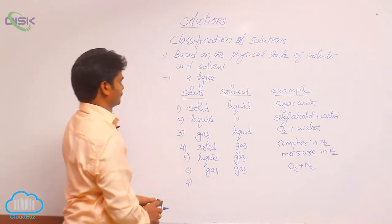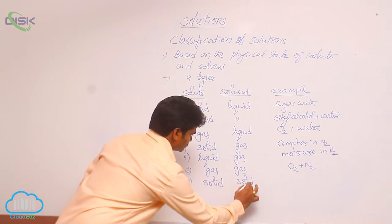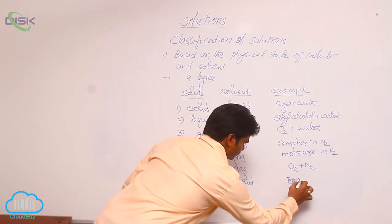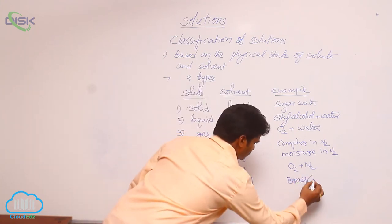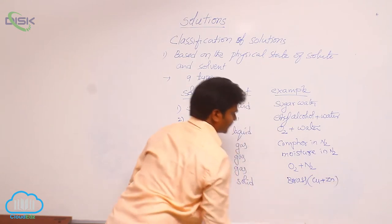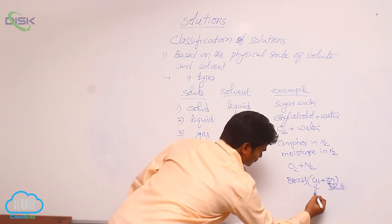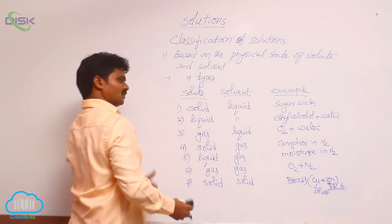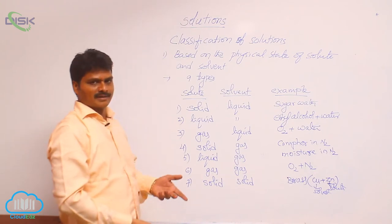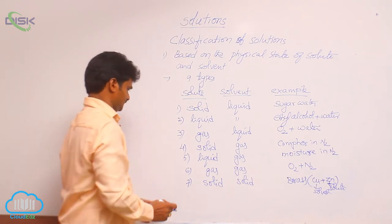Seventh one. Next, solid in solid. For this example, an alloy, brass. Brass is an alloy of copper plus zinc. Where zinc is solute, where copper is solvent. Similarly, we can discuss about bronze also. Bronze is also an alloy. But there, copper and tin are present. Tin is solute, copper is solvent.